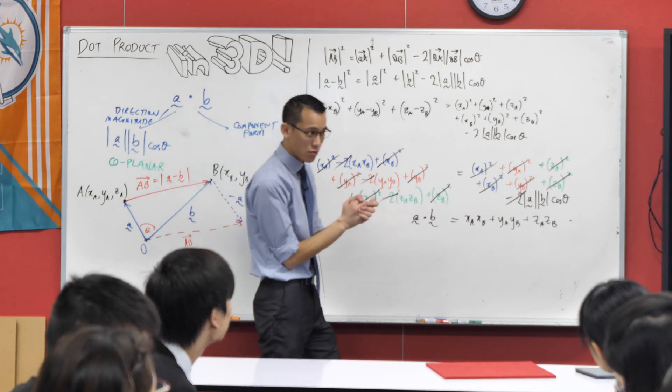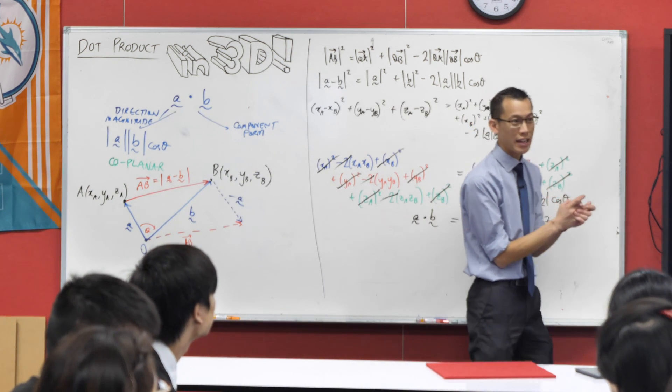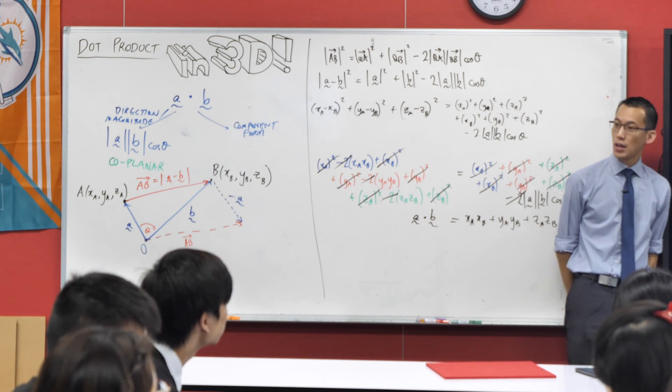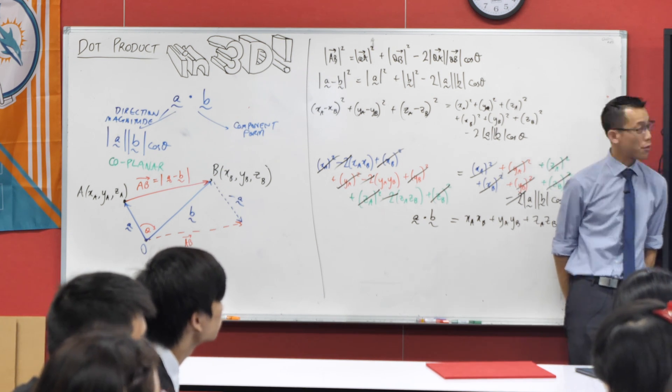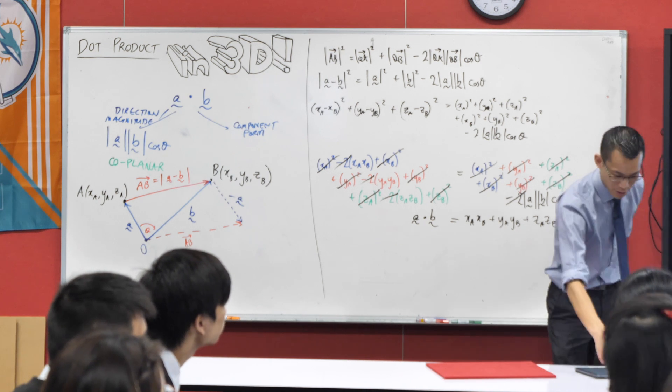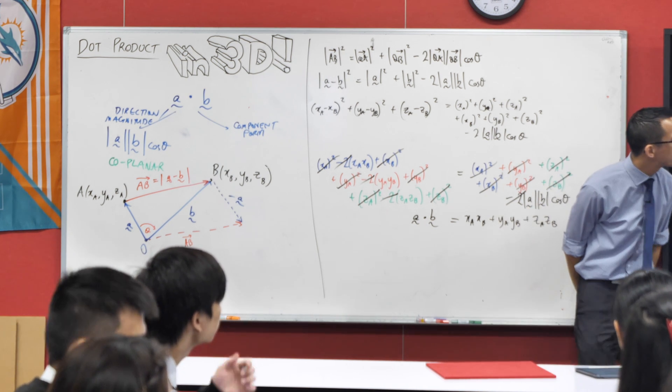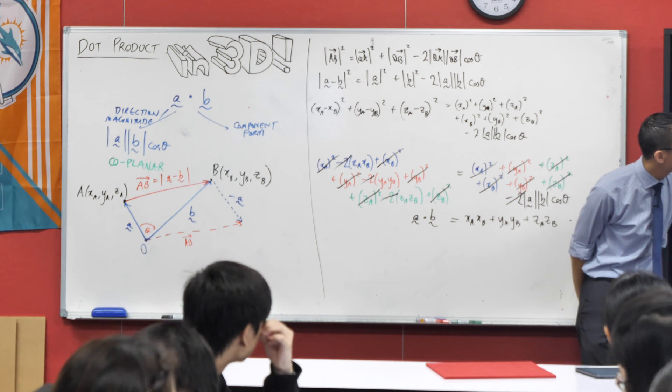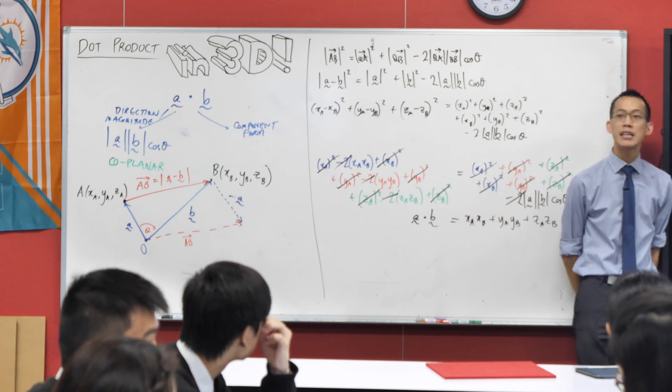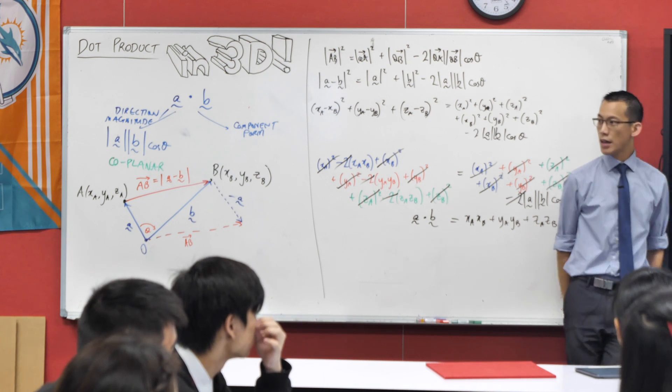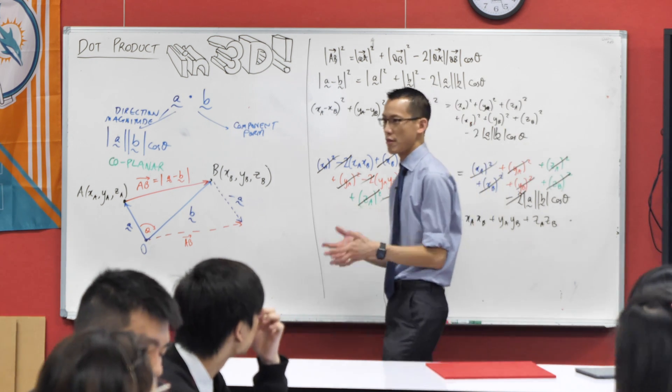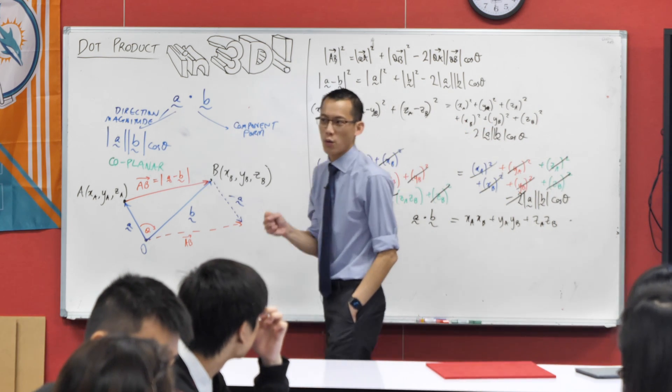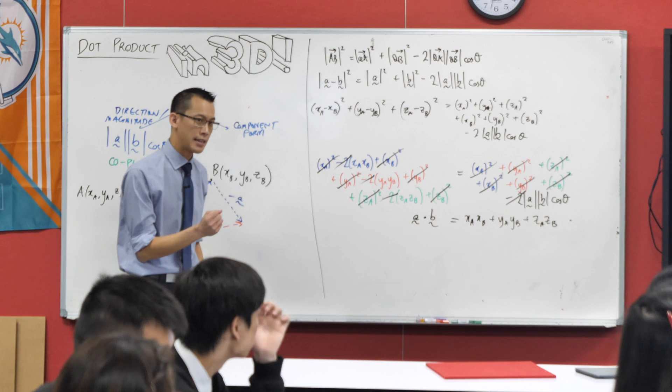But there are things you can do in three dimensions you can't do in two dimensions. Read this question with me, number 11. Find a vector that's perpendicular to both. Oh, there's my screen recording. Are i minus j plus 2k and 2i plus j minus 3k? There's the question. Seems simple enough, right?